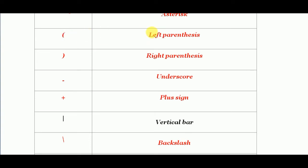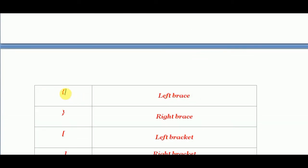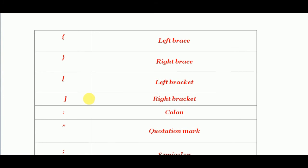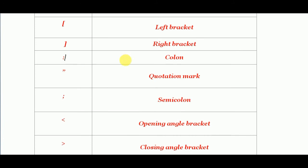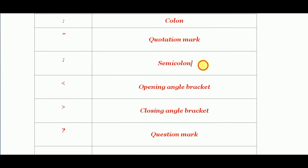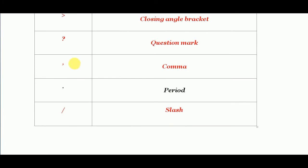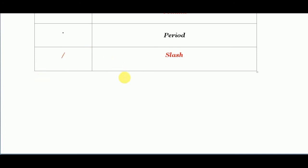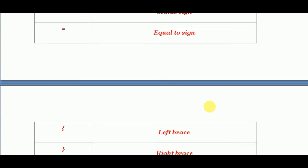This bracket — the opening is called left parenthesis, and the closing is called right parenthesis. Then this kind of bracket: the opening is called left brace, and this is the right brace. Then this kind of bracket is called left bracket, and the closing is called right bracket. So these are the three brackets used in C programming language. Now this is called colon. Then this symbol is called quotation mark. Now this important symbol is called semicolon. Then this is called opening angle bracket and the closing is called closing angle bracket. Then this symbol is called question mark, then comes comma, then this point is called period, and this is called slash.